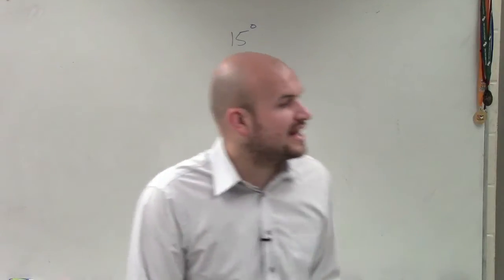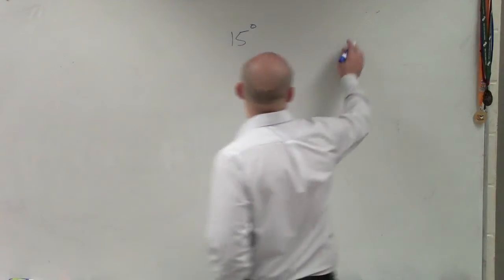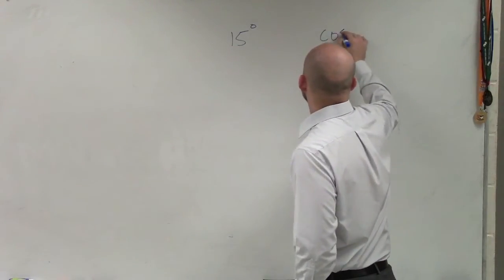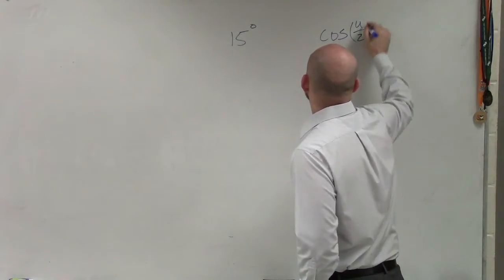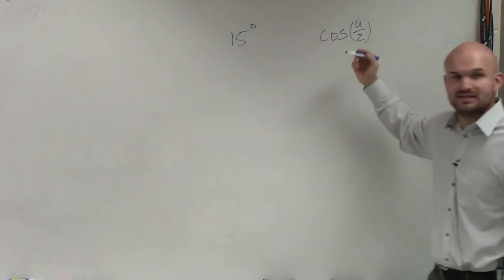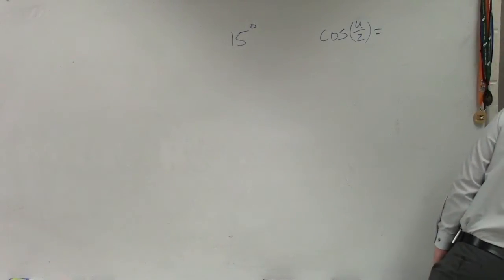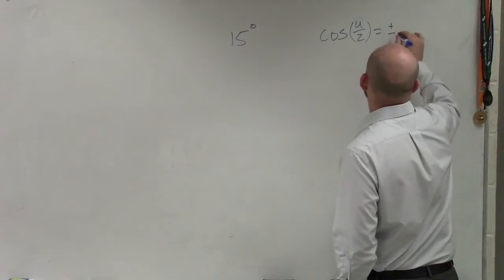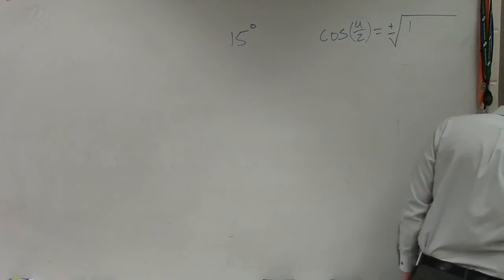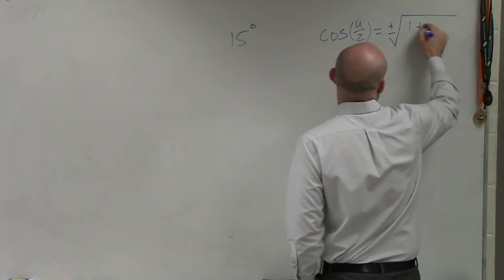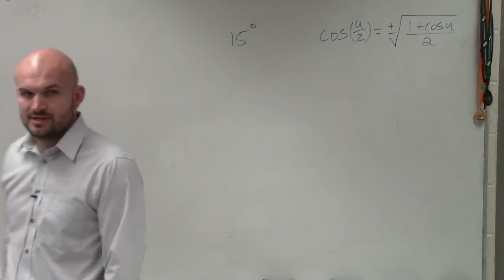But I might also ask you, hey, give me that example as far as using the half angle formulas. And what the half angle formula is saying, let's do the cosine of u divided by 2. So if I take my angle and divide it by 2, then that's going to equal the plus or minus 1, I forgot, 1 plus cosine of u, 1 plus cosine of u divided by 2.